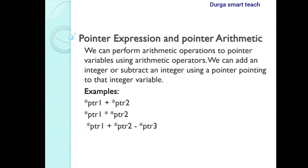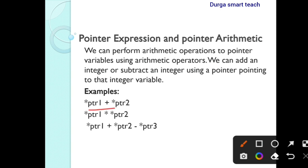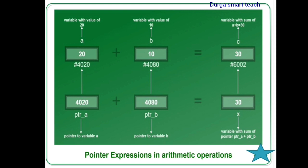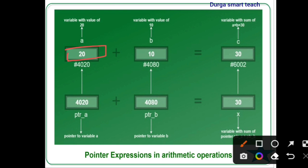In this way we can perform pointer arithmetic operations. Here star ptr1 plus star ptr2 adds the two values by using pointers. Next, star ptr1 multiplied by star ptr2 performs a multiplication operation. So we are performing arithmetic operations using pointers. For example, a contains 20 and b contains 10, so adding these two numbers gives 30.